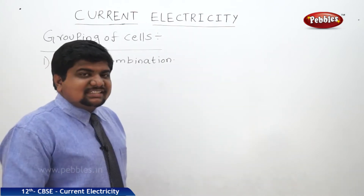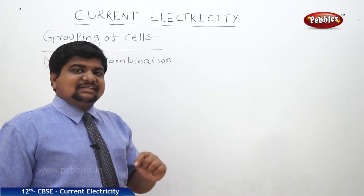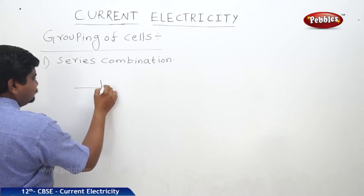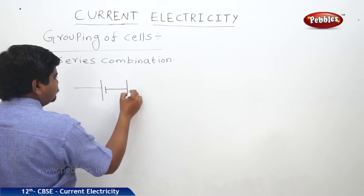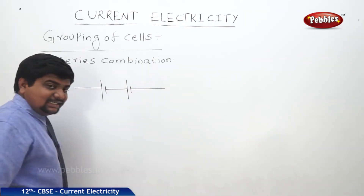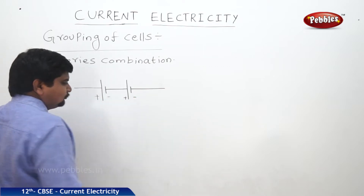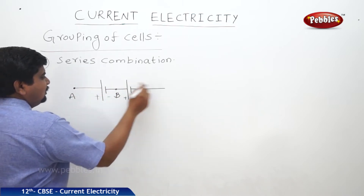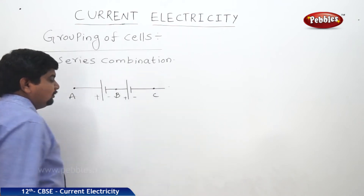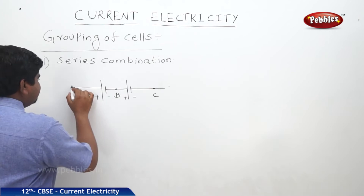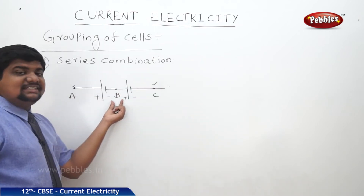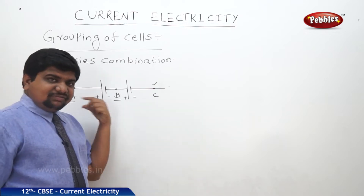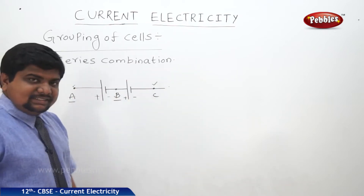Whenever two or more cells are connected in series, what will be the effect on EMF and on internal resistance? We are going to see now. Let us take two cells connected in series. This is the starting point A. After crossing the first cell, the point is B. After crossing the second cell, the point is C. Now I want to find out the potential difference between points A and C. But between A and C, one point B is there. So let me find out the potential difference between A and B first, then B and C. The sum of these two will give the potential difference between A and C.